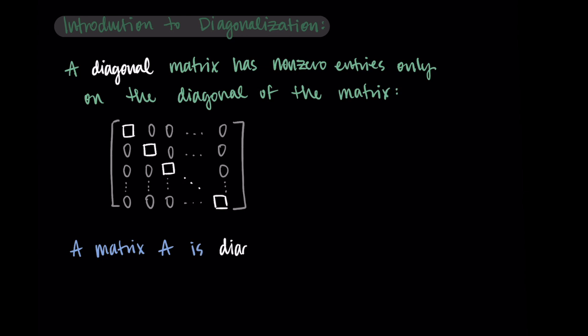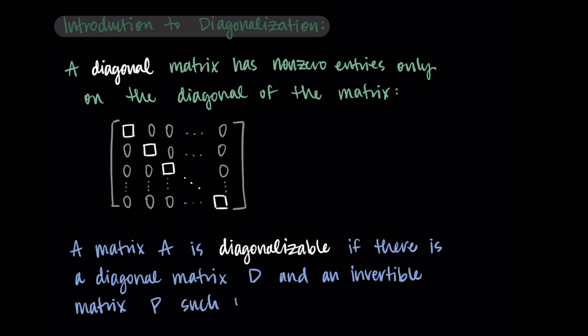We say that a matrix A is diagonalizable if there is a diagonal matrix D and an invertible matrix P such that we can write A as P times D times P inverse. We're looking at this specific type of matrix A that has this property where we can break it down into a product of three matrices: P, D, P inverse. And the special property here is that middle matrix D is diagonal.